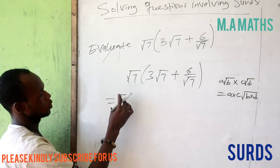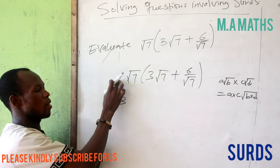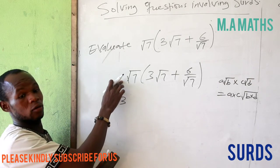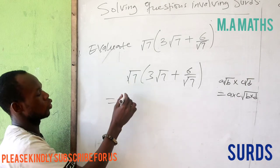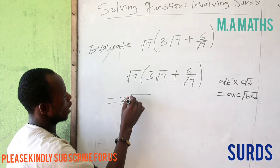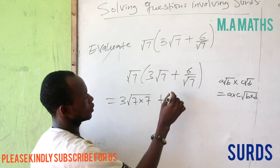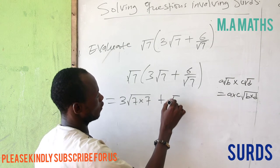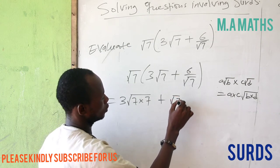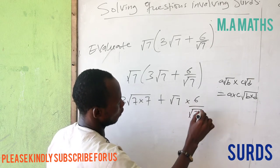The number behind √7 is 1, so 1 times 3 gives us 3, and we have 7 multiplied by 7. Plus, we multiply √7 by 6 over √7.